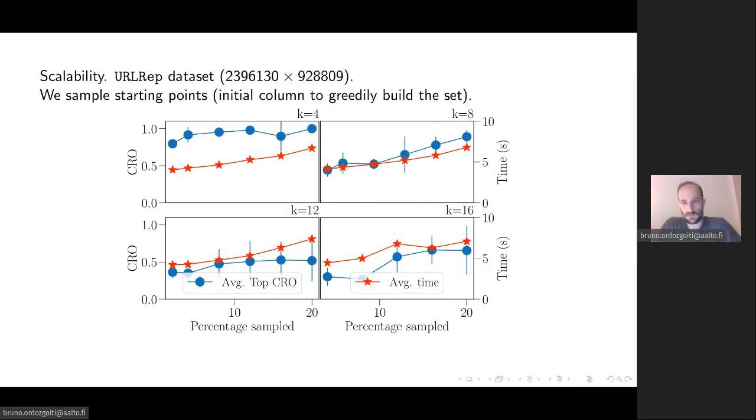Finally we test the scalability of the method. We consider a fairly high dimensional dataset. Running our algorithms on the dataset can actually be a little bit challenging because what the algorithms do is build CRO subsets readily starting from each of the columns of the dataset. So what we do is sample columns of the dataset and use them as initial points. And the insight here is that in order to find one of these subsets, it should be enough to consider one of the columns it contains.